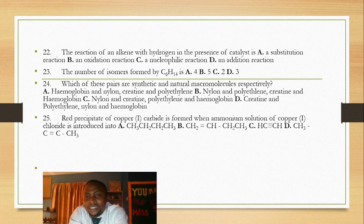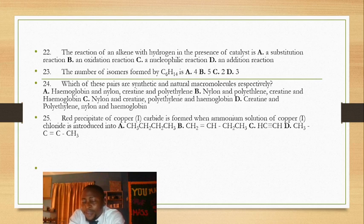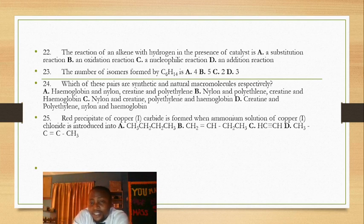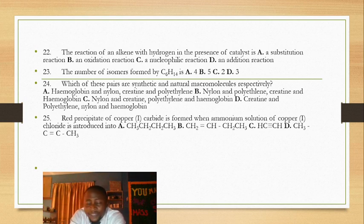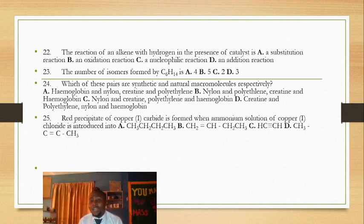Question 25: a red precipitate of copper(I) carbide — this is the reagent used to differentiate alkynes from alkenes. Both are unsaturated, so you can differentiate them from alkanes using bromine water, KMnO₄, or K₂Cr₂O₇. But to distinguish between alkynes and alkenes, you use ammoniacal copper(I) chloride or copper(I) carbide.